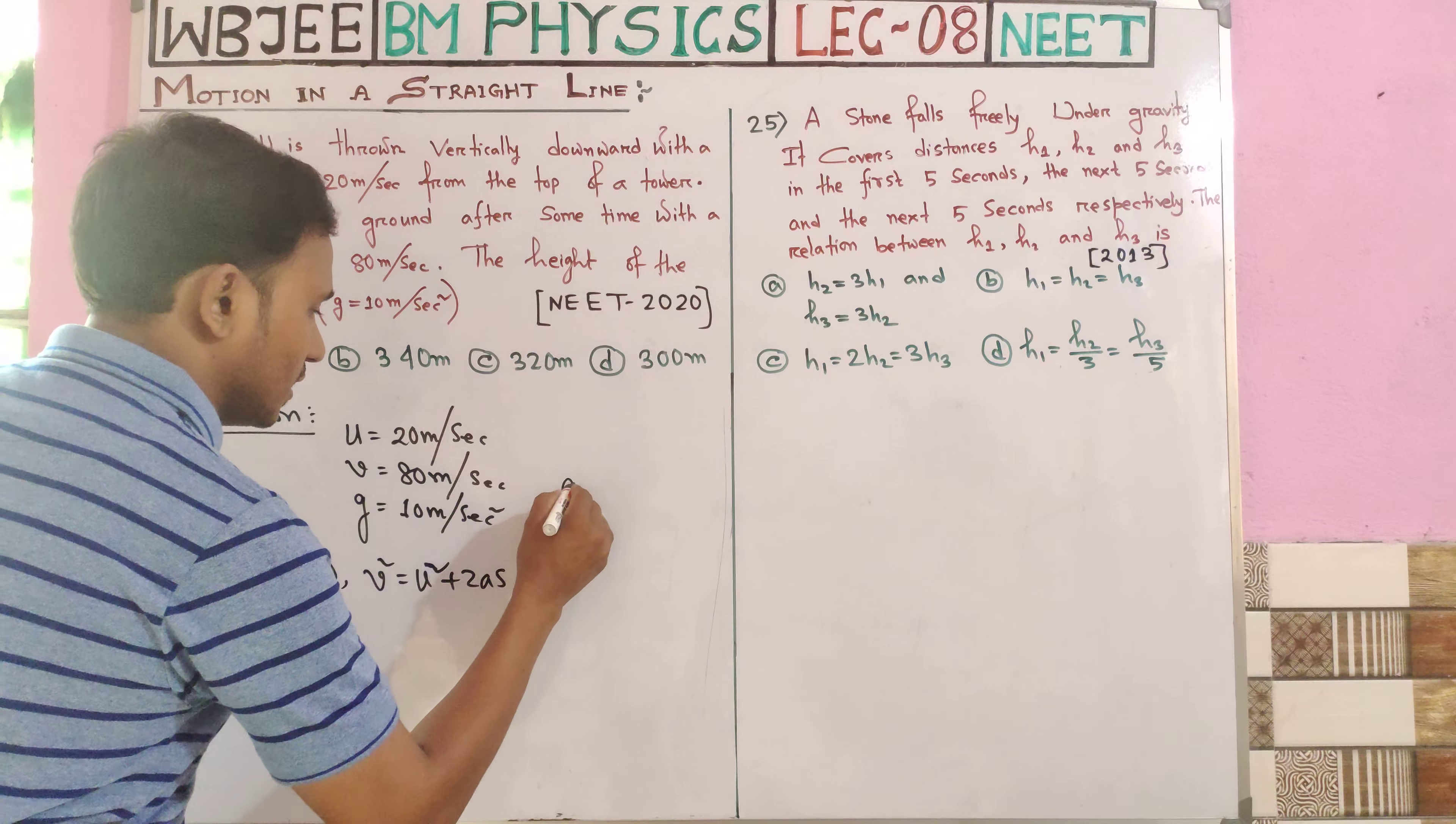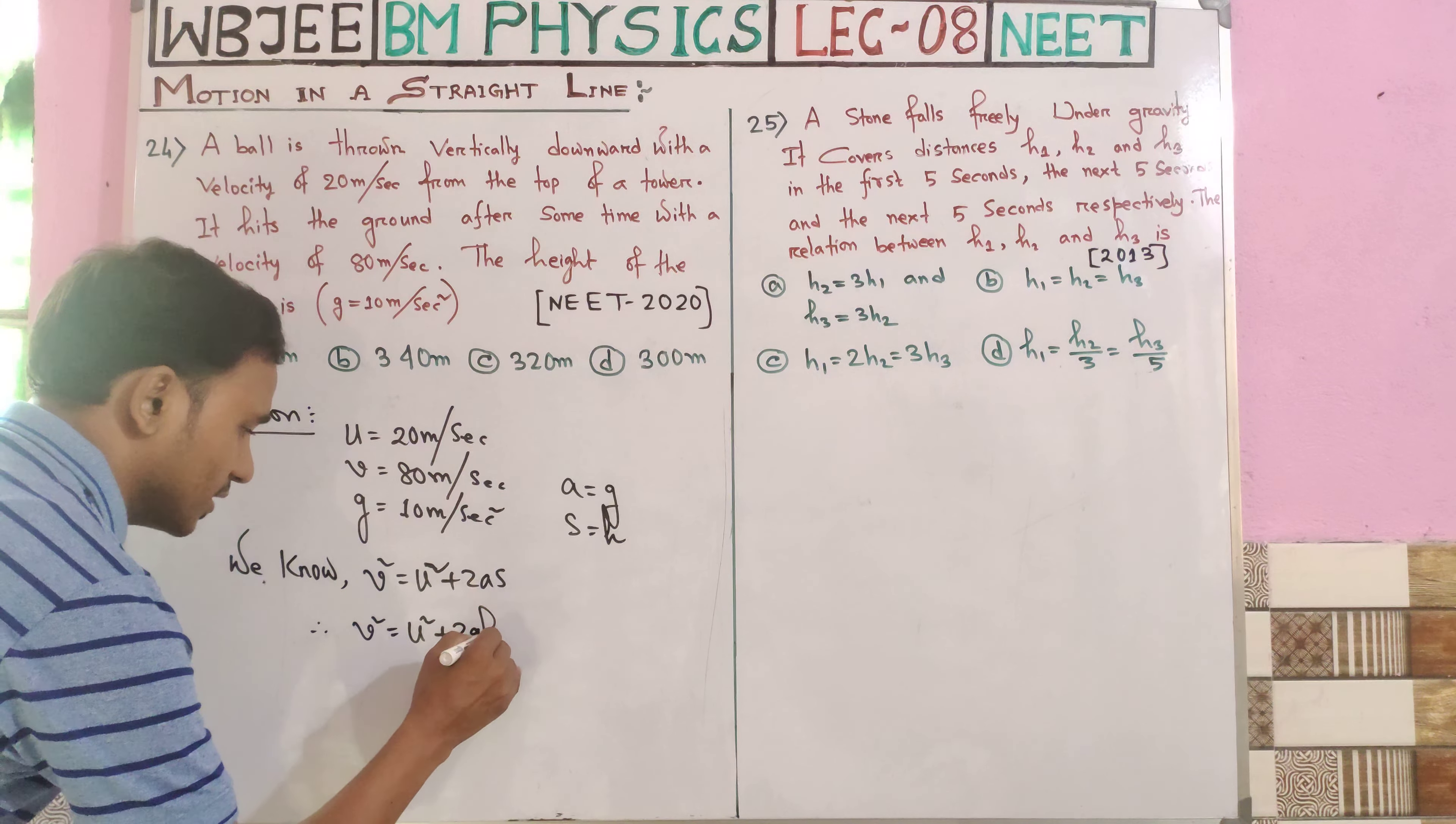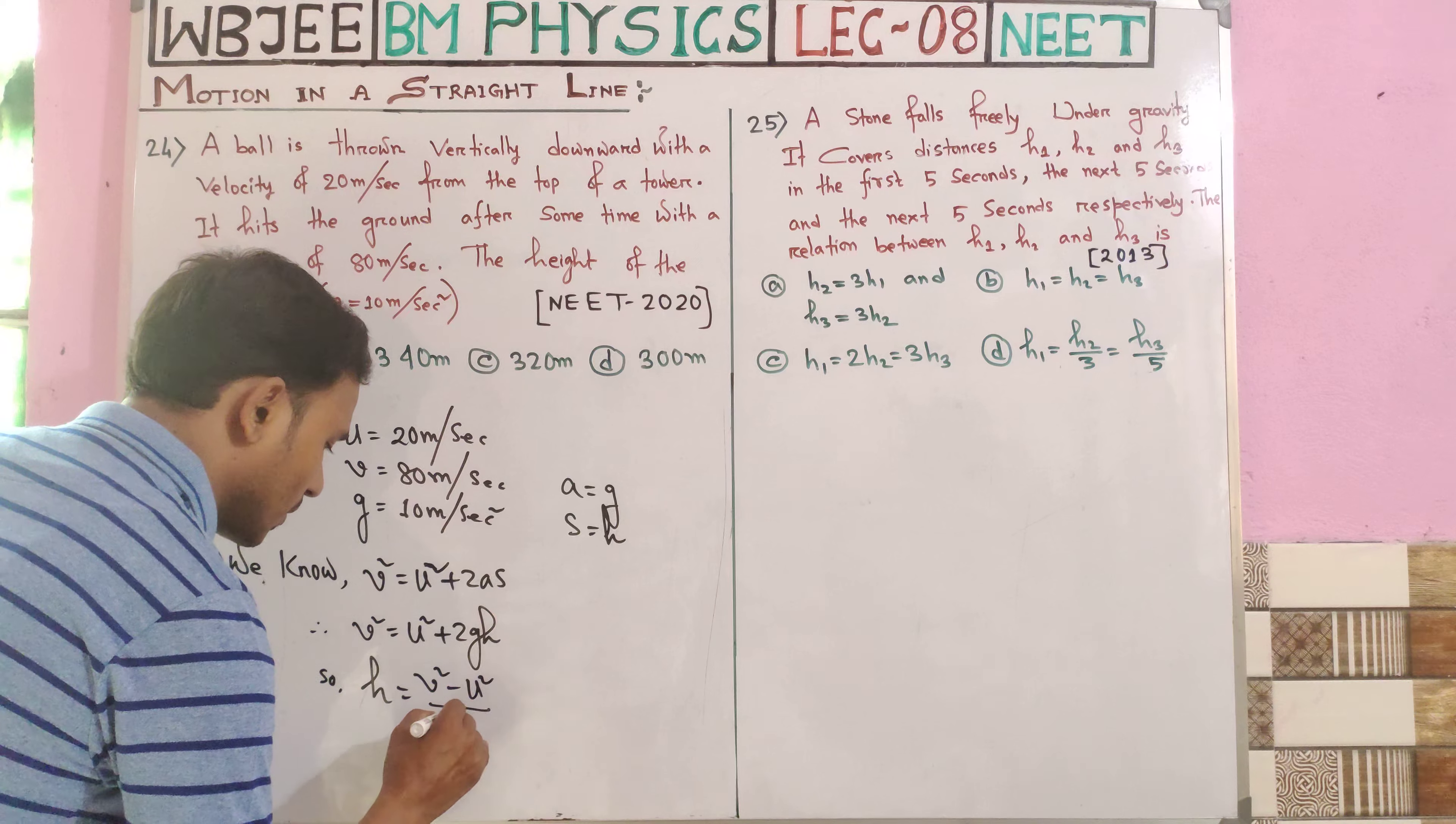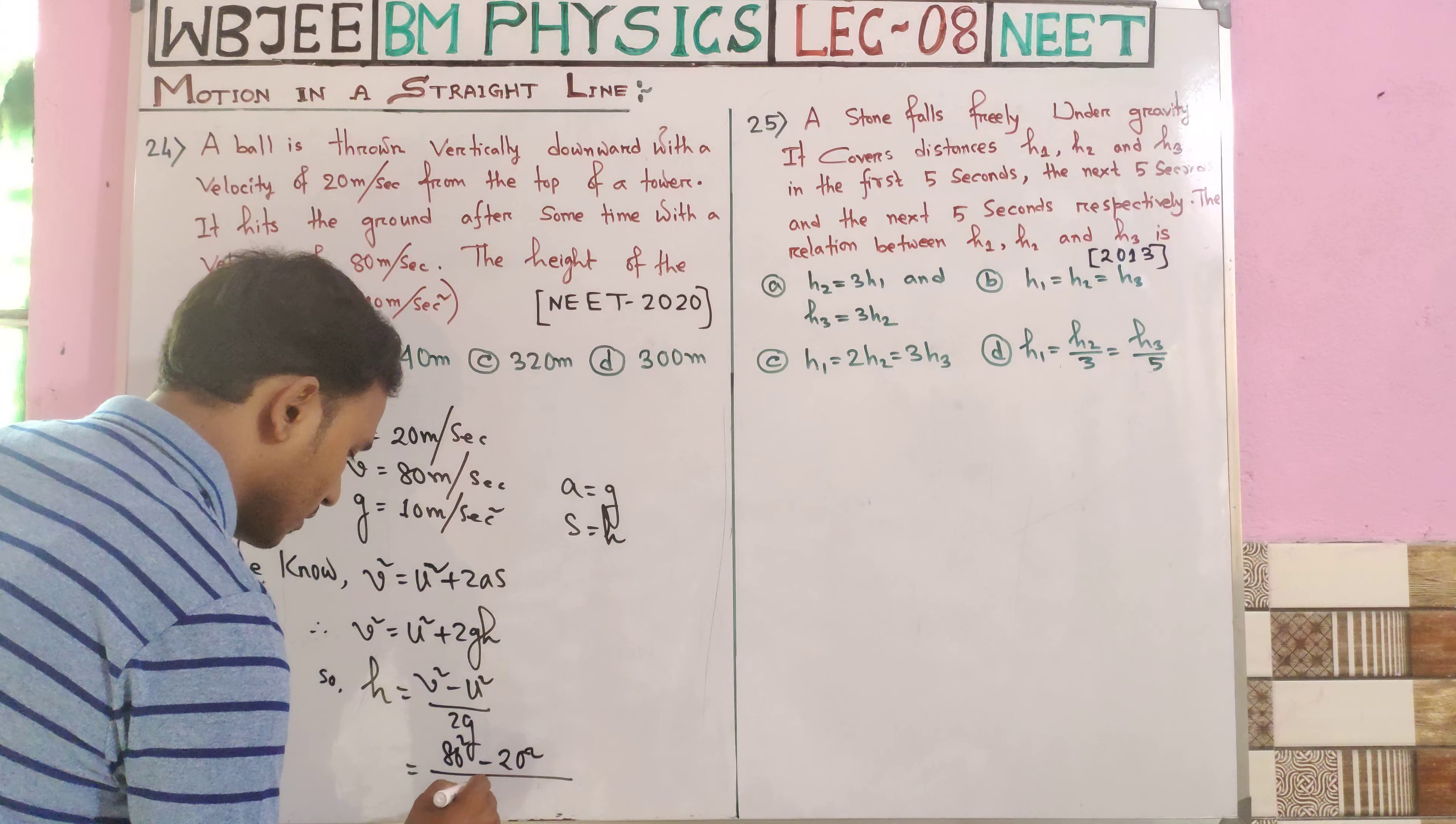We know V squared equals U squared plus 2gH. So H equals V squared minus U squared divided by 2g. Putting the values: 80 squared minus 20 squared divided by 2 into 10.